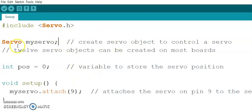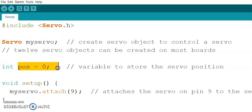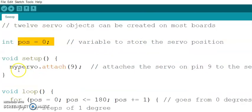In this example we are going to use only one servo motor, so only one object is created. The variable position is initialized to zero, because we are going to move the servo motor through different angles from 0 to 180 degrees. We declare position as an integer variable to store the servo positions globally.